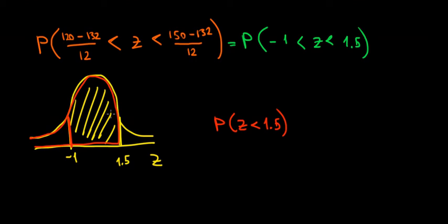So, what that means is that we have to subtract this small tail, the tail to the left of minus 1. So, we have to subtract the probability of the z value being less than minus 1. And now, we can solve it.